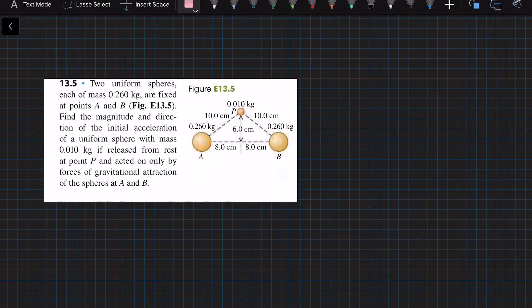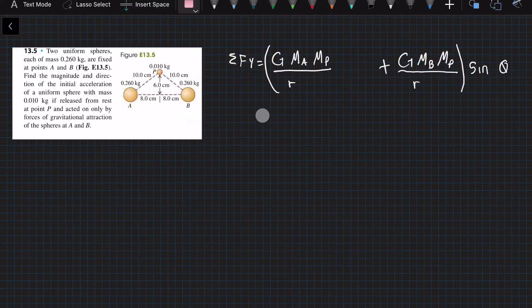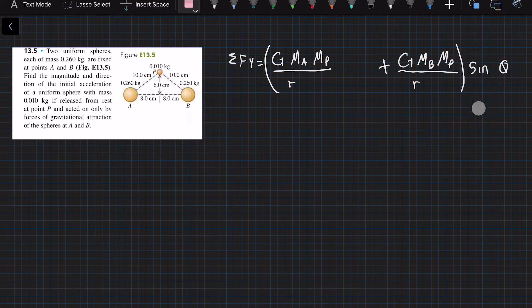The formula that we're going to use is the sum of the forces in the y direction equals this equation: the coefficient of G times mass of A times mass of P divided by R, plus the coefficient of G times mass of B times mass of P divided by R, and all of that times sine of theta. We have all the given information. The only thing that we need to find right now would be sine of theta, and then we will be ready to plug in numbers.